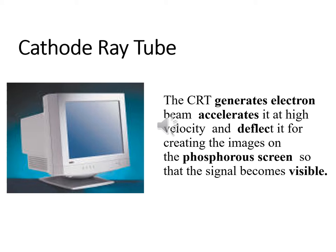These electron beams are emitted by an electron gun assembly which consists of a cathode, a heater, and all elements. These electron beams move at very high velocity, are deflected by the deflection plates, and finally reach the phosphor screen where the signal becomes visible. Cathode ray tubes are used in different applications, like the cathode ray oscilloscope used in electronics labs.